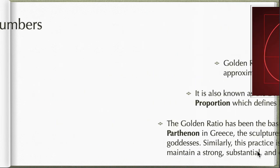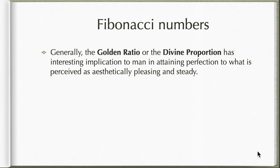Let's wrap it up. The Fibonacci numbers, generally this golden ratio or this divine proportion, actually goes with many names - the golden section, the golden mean - but let's call it golden ratio or the divine proportion. It has interesting implications to man in attaining perfection to what is perceived as aesthetically pleasing and steady. Actually this value, if you have this value in your body, just one example is the length of your head to its width. If it's the golden ratio 1.618, you're perceived to be mathematically beautiful.